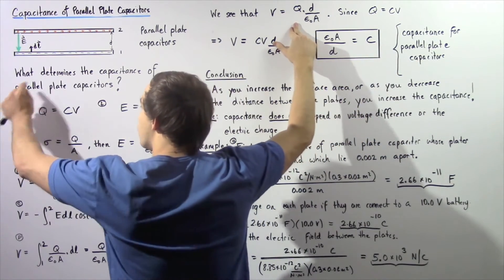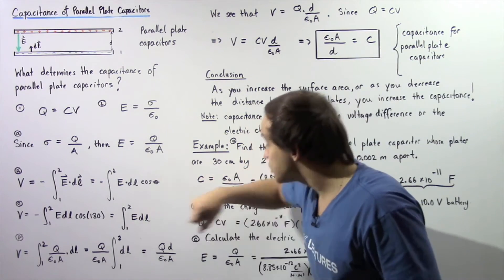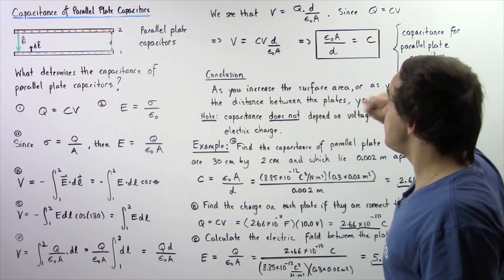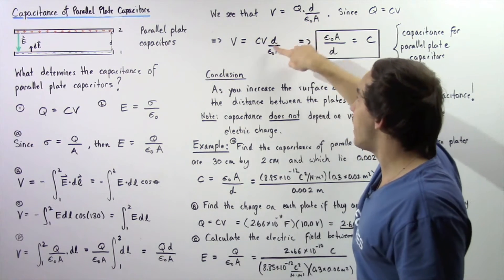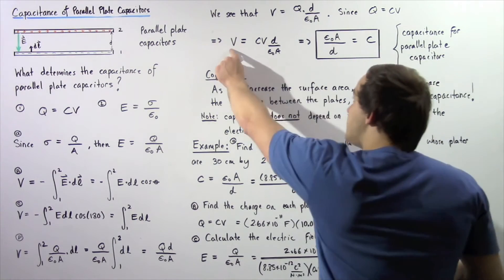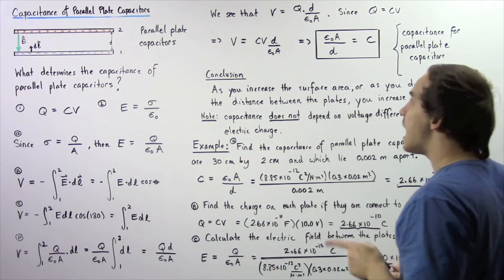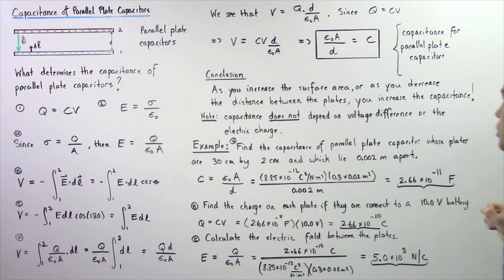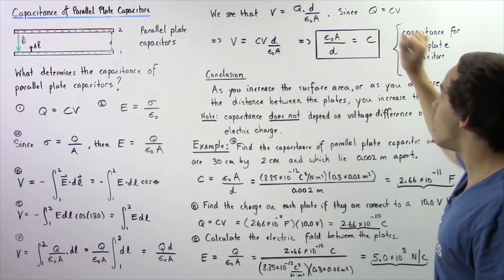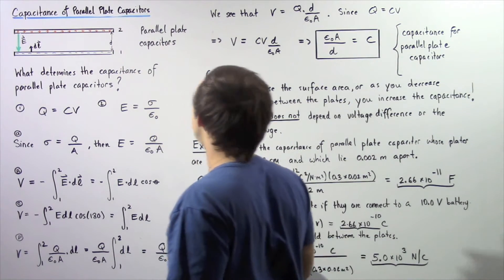Going back to equation one, Q = CV, we replace Q with C multiplied by V. We see the voltage equals C·V·D divided by epsilon naught multiplied by A. Since V appears on both sides, we cancel it and rearrange to solve for C. The capacitance of a parallel plate capacitor is therefore C = ε₀A/D — epsilon naught multiplied by the surface area of one plate divided by the distance between the two plates.